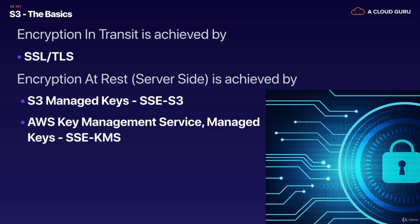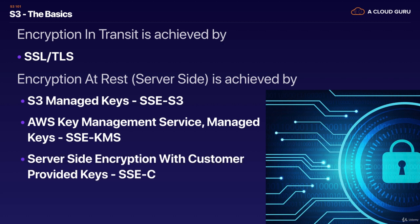We then have AWS Key Management Service, where you and Amazon manage the keys together. This is called managed keys server-side encryption with KMS, or SSE-KMS. And then we have server-side encryption with customer provided keys, where you actually give Amazon your own keys that you manage. You can also encrypt the object yourself on the client side — on your Mac or PC — and then upload that object to S3. So there are four ways of doing encryption: SSE-S3, SSE-KMS, SSE customer provided keys, and client-side encryption.